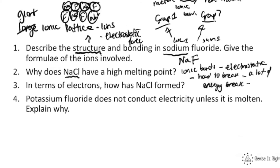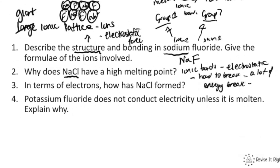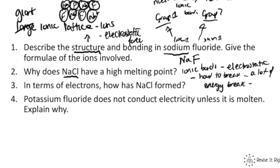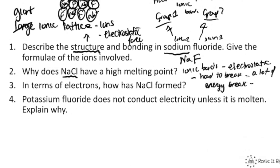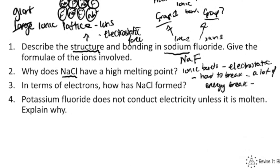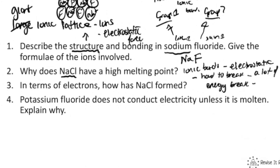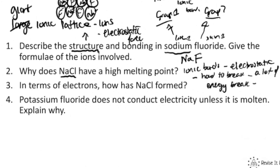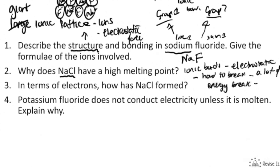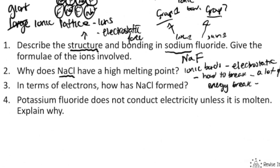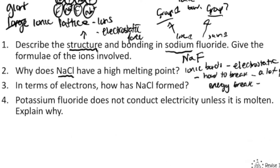Finally: potassium fluoride does not conduct electricity unless it's molten — explain why. Potassium fluoride is an ionic compound. In ionic compounds, yes, there is a charge — they do contain charged particles. However, these charged particles cannot freely move through the compound, and therefore it cannot carry the charge, and therefore it does not conduct electricity. A good answer would be: potassium fluoride is an ionic compound; ionic compounds contain charged particles, but these charged particles are not free to move, so they cannot carry the charge and cannot conduct electricity.